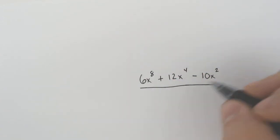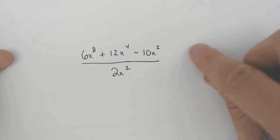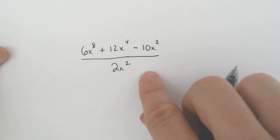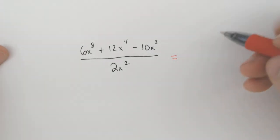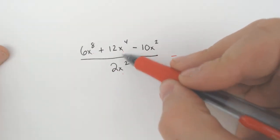Let's say you had 6x to the eighth plus 12x to the fourth minus 10x squared. And we'll divide everything by 2x squared. So maybe instead of it being written out as a divide symbol, maybe it's all over 2x squared. If that is the case,